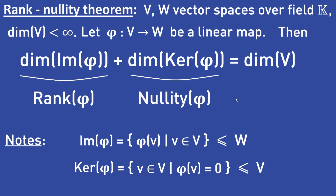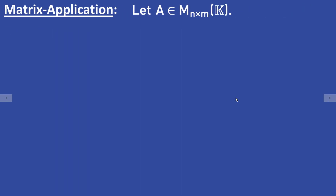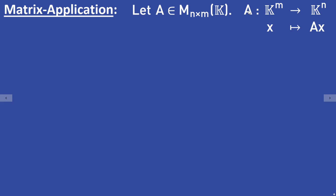We will now apply the theorem to matrices. Let A be an n times m matrix with entries from the field K. You may already know that matrices describe linear mappings — specifically, the matrix A describes a linear map from K^m to K^n where x is mapped to A times x. The rank-nullity theorem holds true for arbitrary linear mappings, and therefore it also holds true for matrices, since matrices describe particular linear mappings.